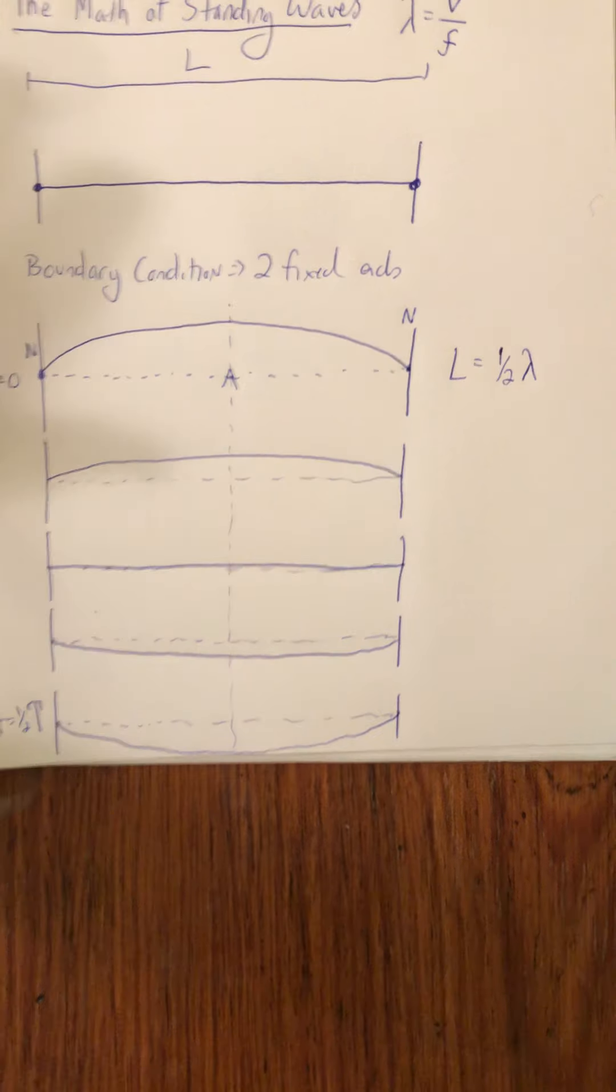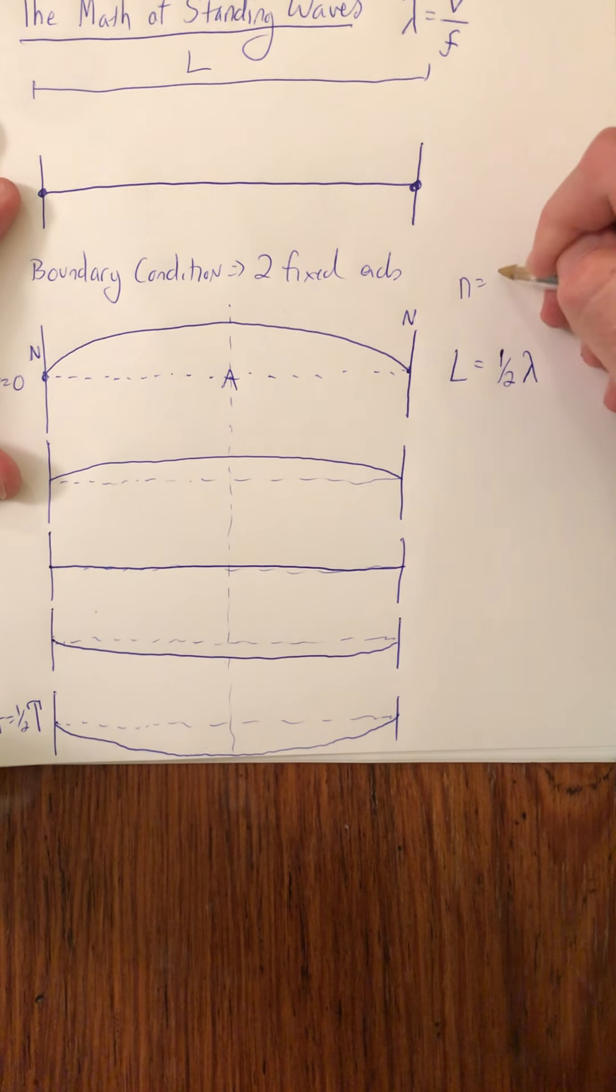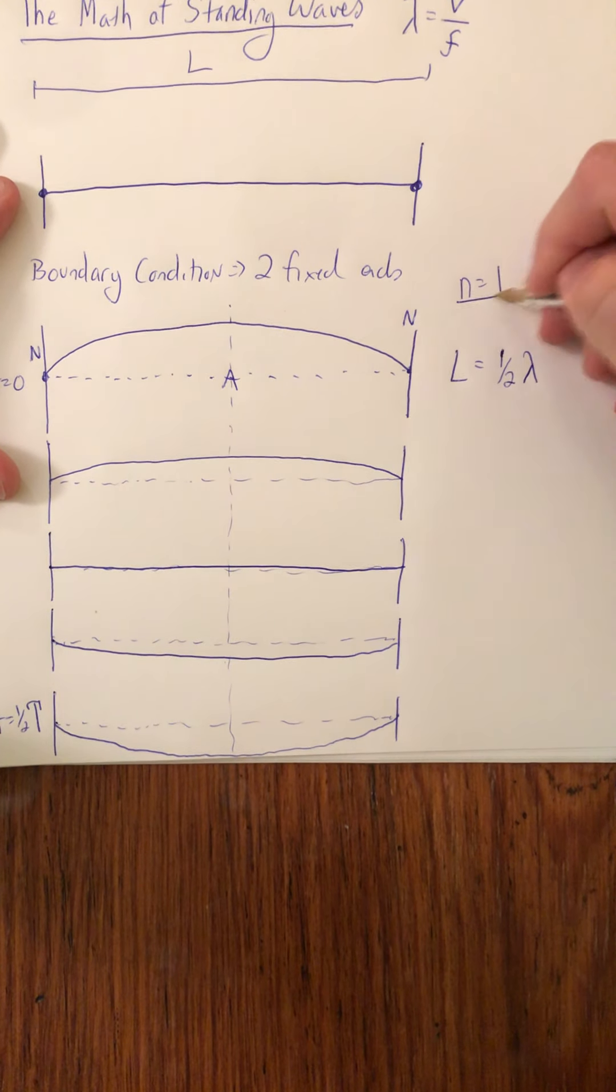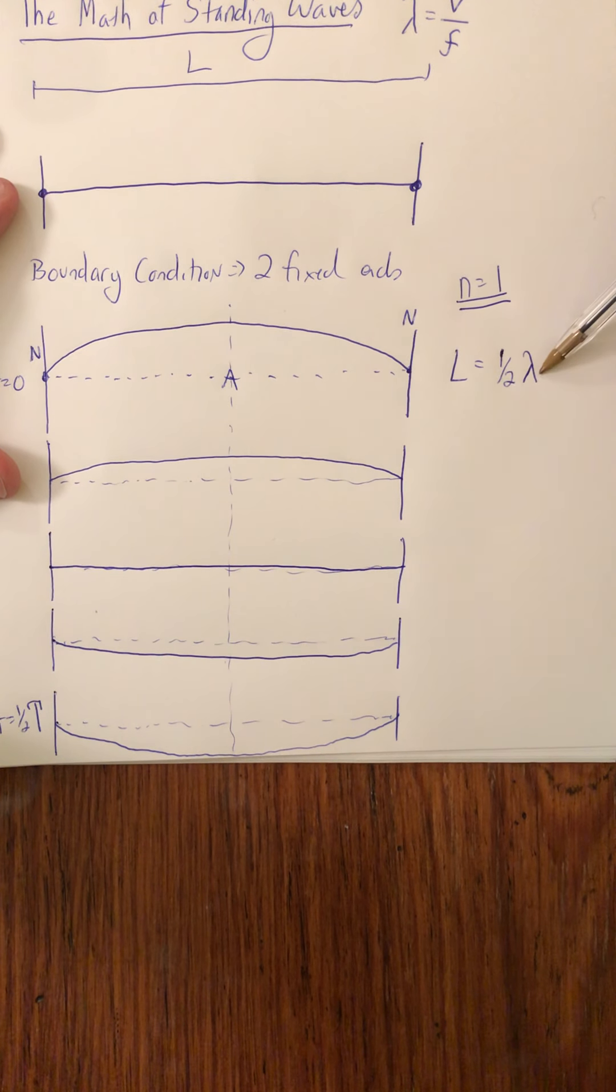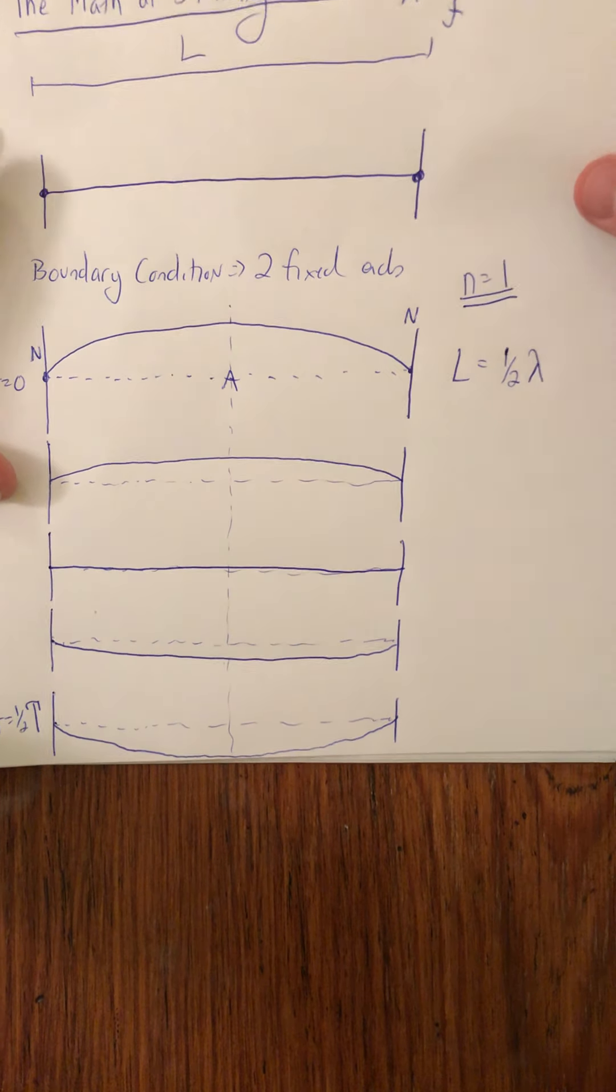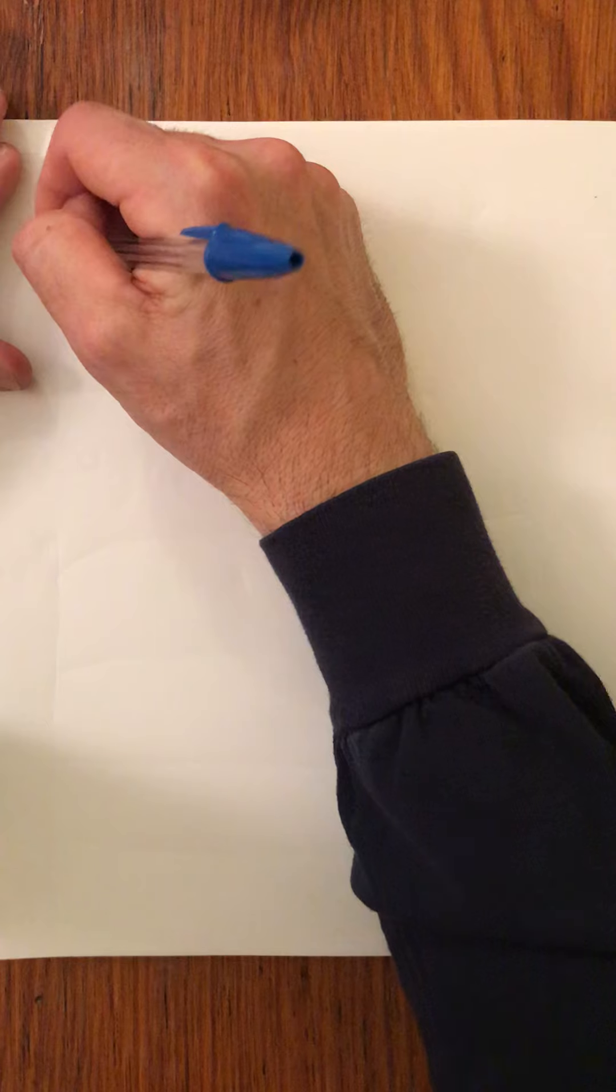And so this is for what we're going to call the n equals one standing wave. Because we see here one half wavelength, or one antinode with two fixed ends. So let's go through the mathematical progression of additional higher order modes on that same length of string.